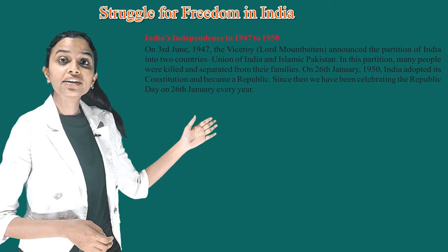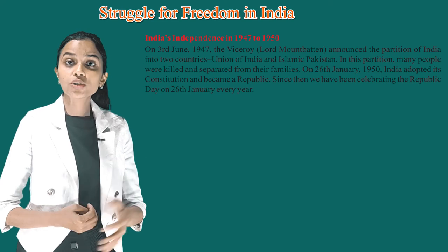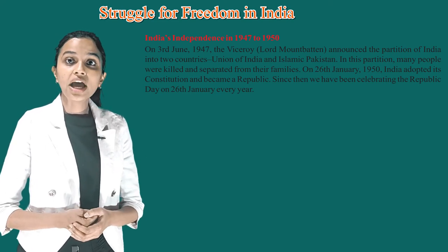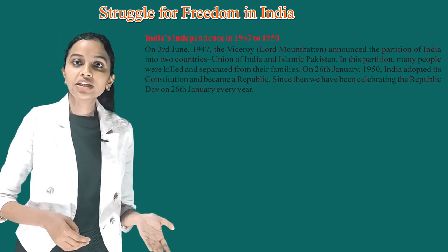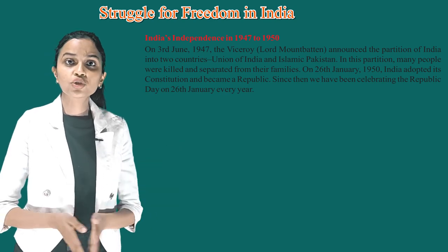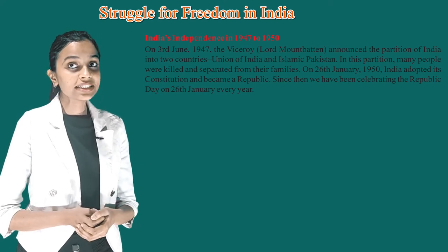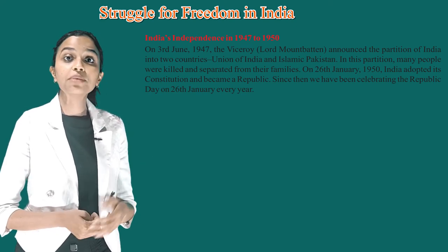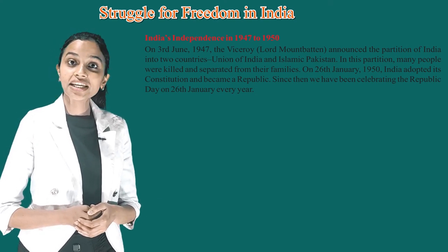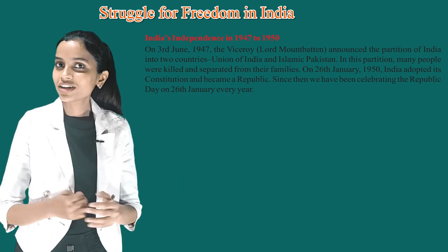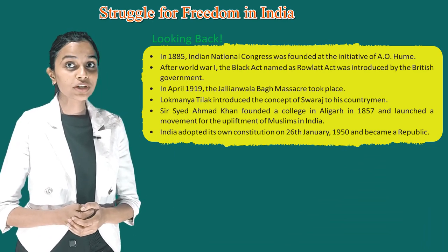India's Independence 1947 to 1950: on 3rd June 1947, the Viceroy Lord Mountbatten announced the partition of India into two countries — the Union of India and Islamic Pakistan. In this partition, many people were killed and separated from their families. On 26th January 1950, India adopted its constitution and became a republic. Since then, we have been celebrating Republic Day on 26th January every year.